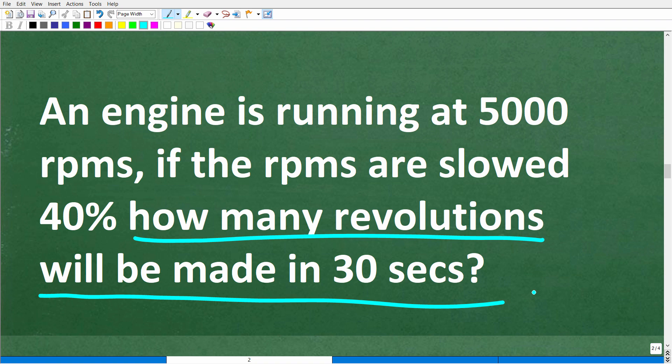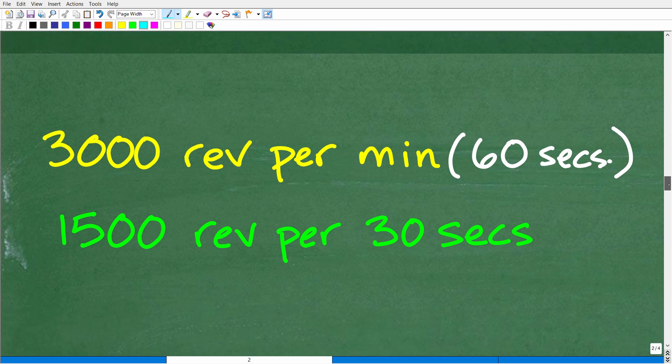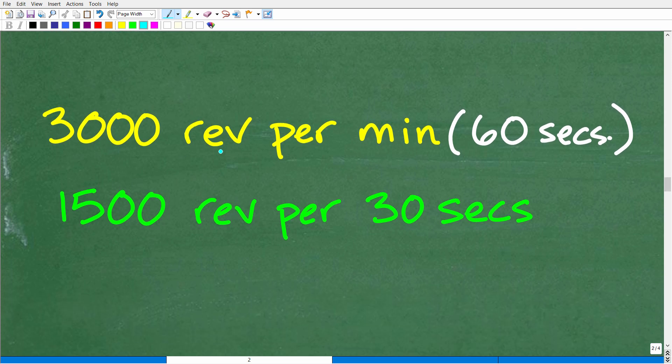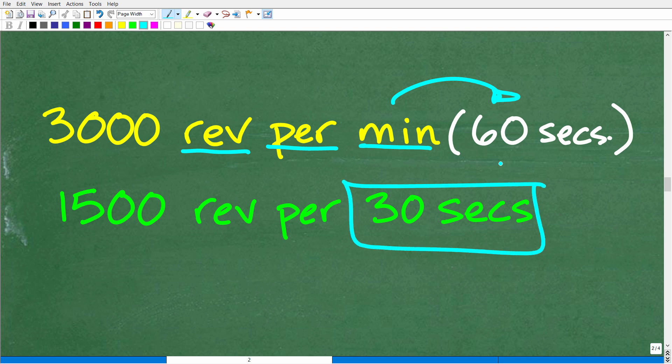So this is not that difficult to figure out because if an engine is going 3,000 RPMs, that's revolutions per every minute or 3,000 revolutions per every 60 seconds. So how many revolutions will the engine make in 30 seconds? Well, all we have to do is divide each number by 2 because 60 seconds divided by 2 is 30 seconds. So 3,000 divided by 2 is 1,500.